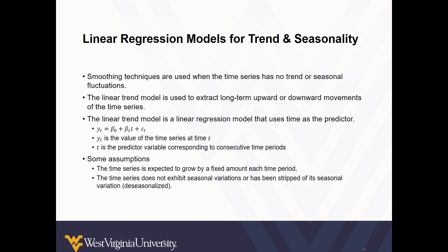Smoothing techniques are ideal when the time series has no trend or seasonal fluctuations. But when the time series does have these artifacts, the linear trend model is often a better choice. The linear trend model is a linear regression model that uses time as the predictor variable. First, the time series is expected to grow by a fixed amount during each time period.